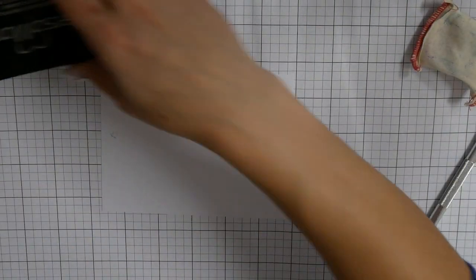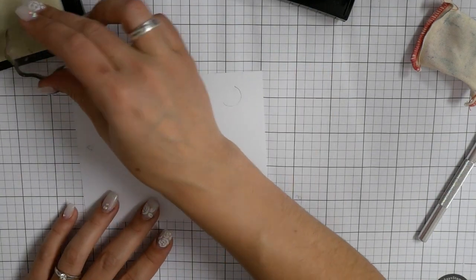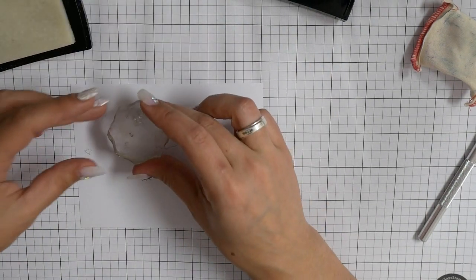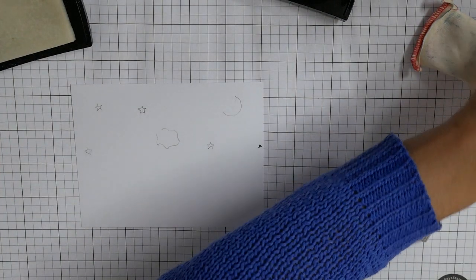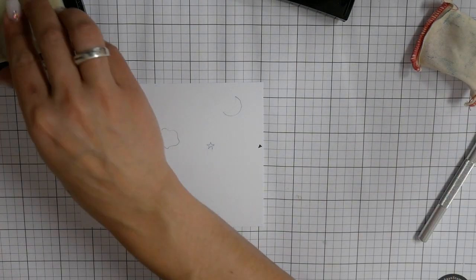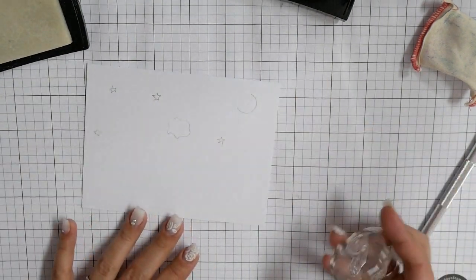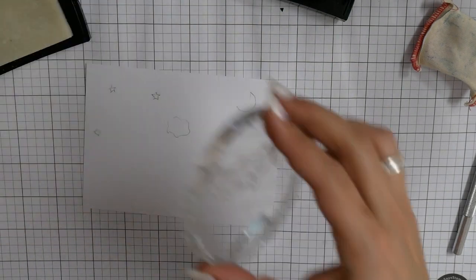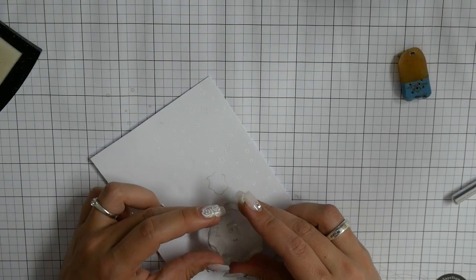So now I am penciling where to put my stars and my little moon and where the thinking cloud will be later. I am stamping it with VersaMark ink pad and using white embossing powder.